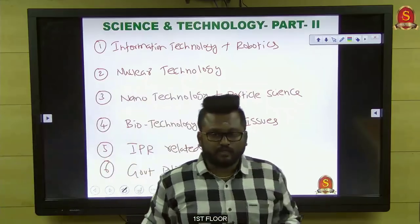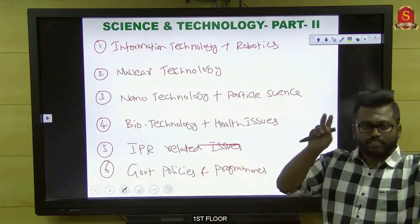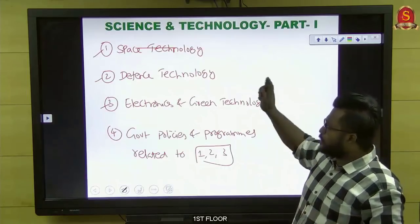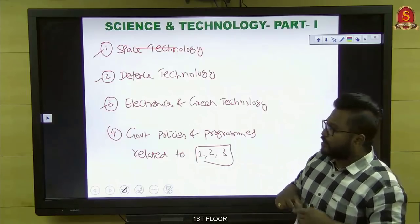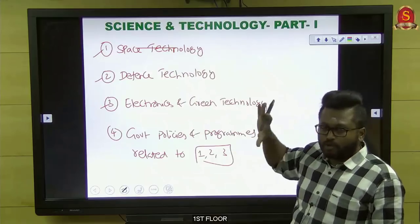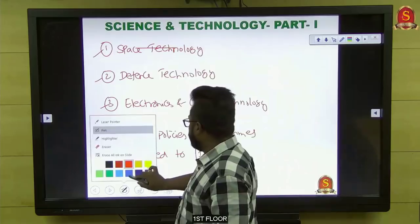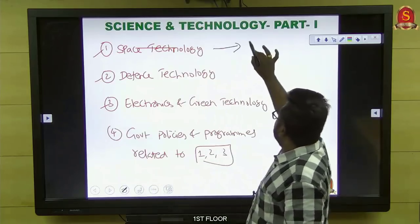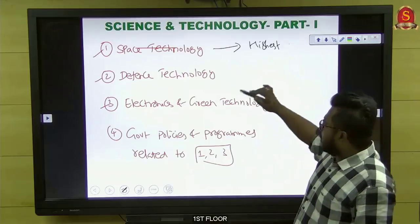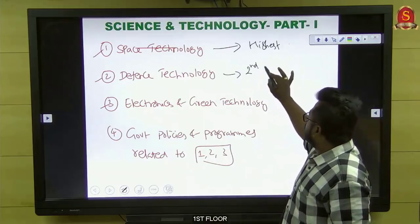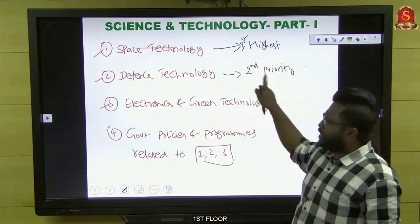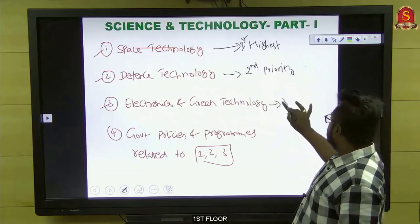Based on weightage observed from individual subtopics in previous years' questions, among the three major areas in Part 1, space technology holds the highest priority. Second priority goes to defense technology, and third to electronics. If you move in this way, you won't skip any topic. From previous year analysis, at least two questions will come from space technology each year — connected to launch vehicles/satellites, celestial bodies, or space agency missions.